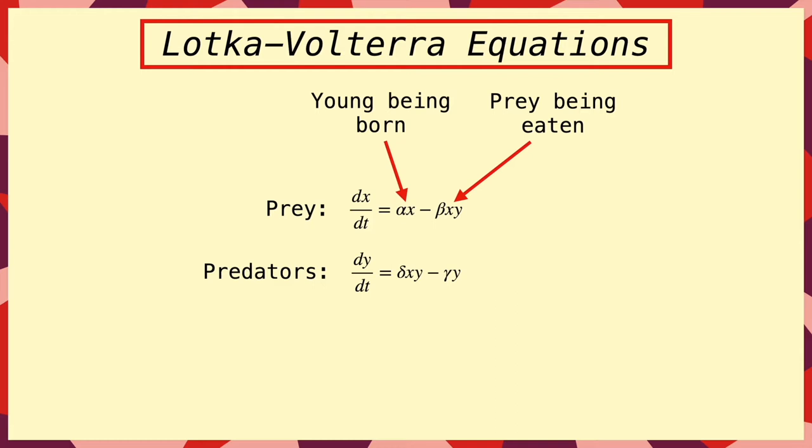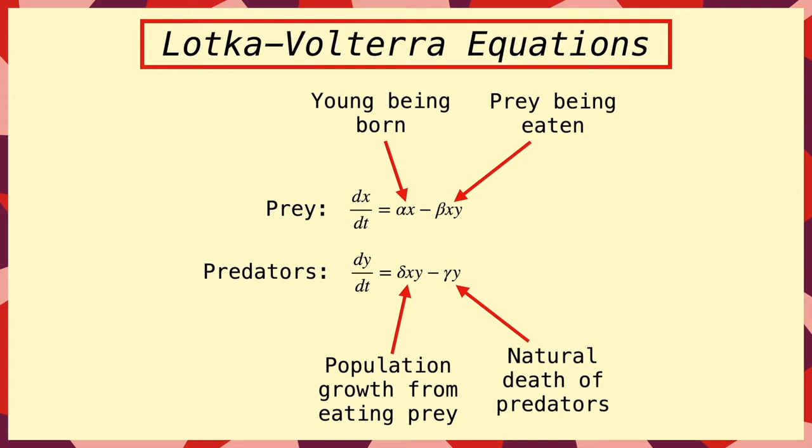Next, for the predator, we have a term which says that the population growth is proportional to the amount of prey that they eat, and also a term to represent the natural death of the predators as they get older.